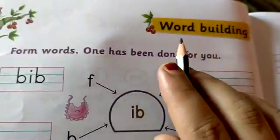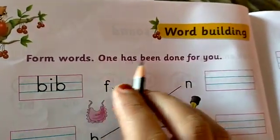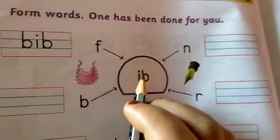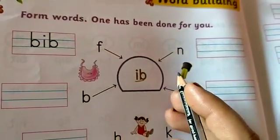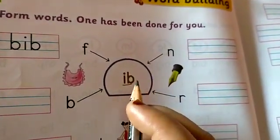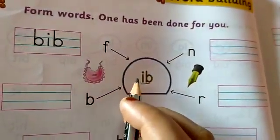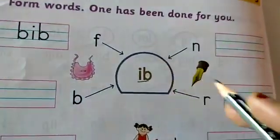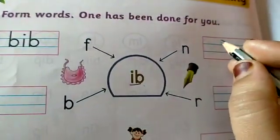Now, we are going to learn word building. Form words. One has been done for you. Using I B and these letters, we are going to form a new word. Here, B I b, bib. F I b, fib.